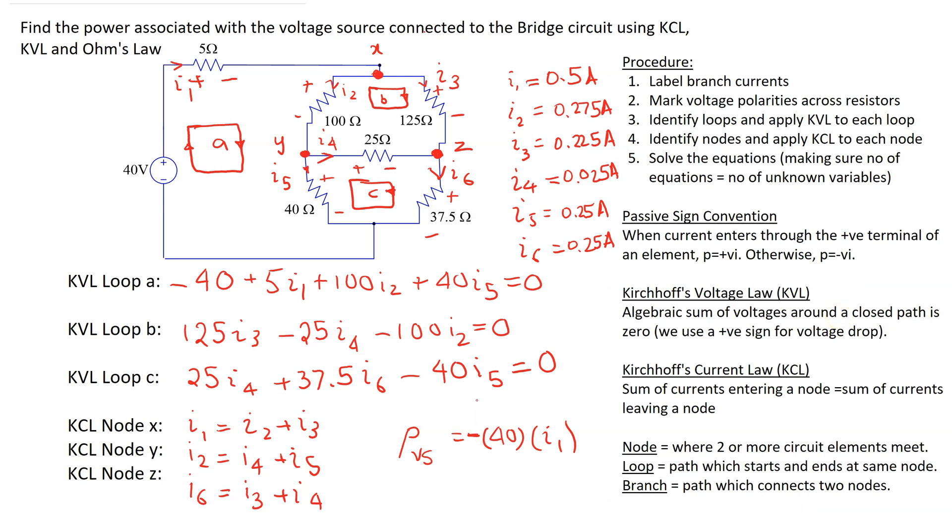Substituting the values, I1 is 0.5, so this gives minus 20 watts. The negative sign indicates that the independent voltage source is generating power in this circuit.